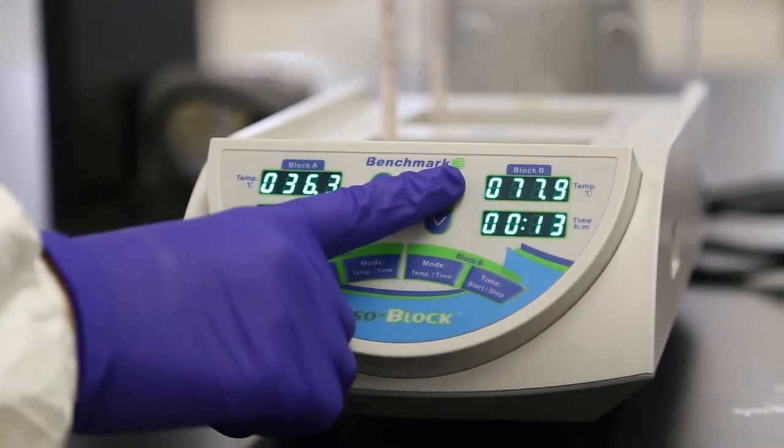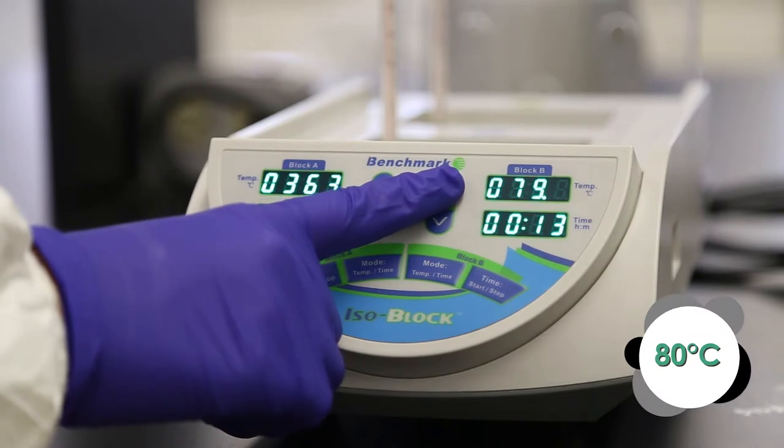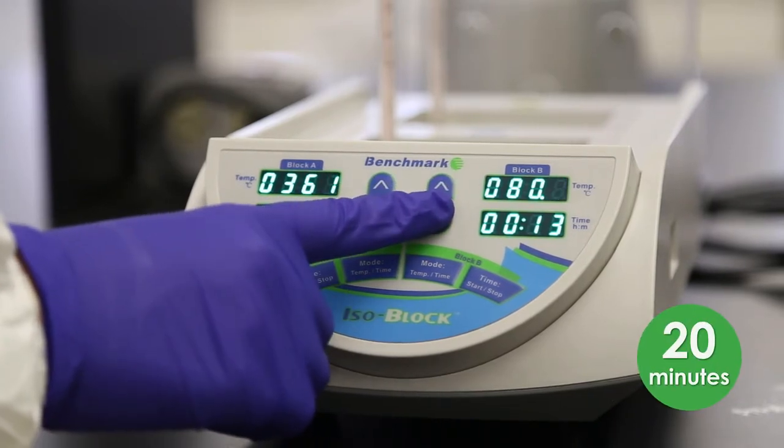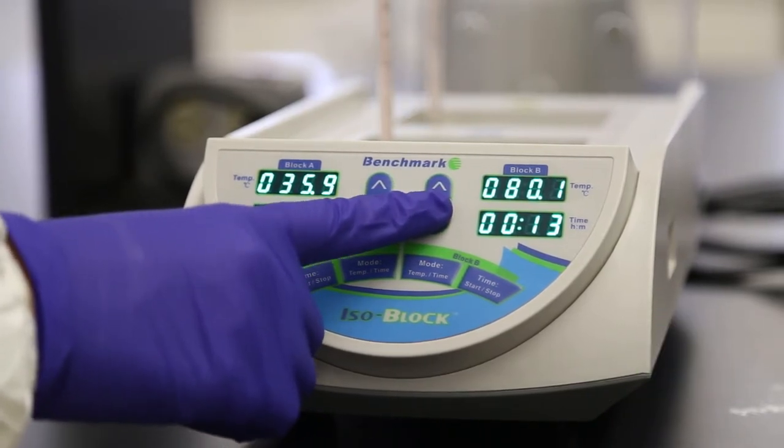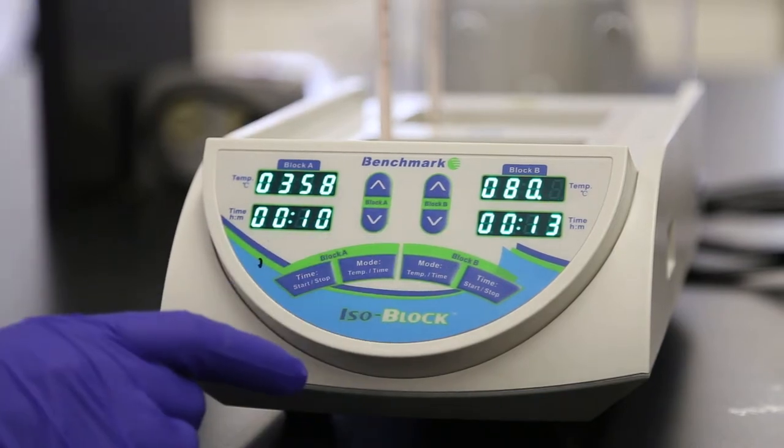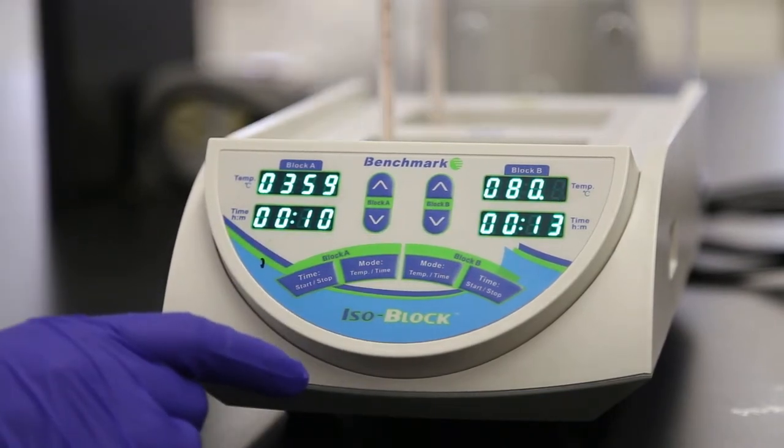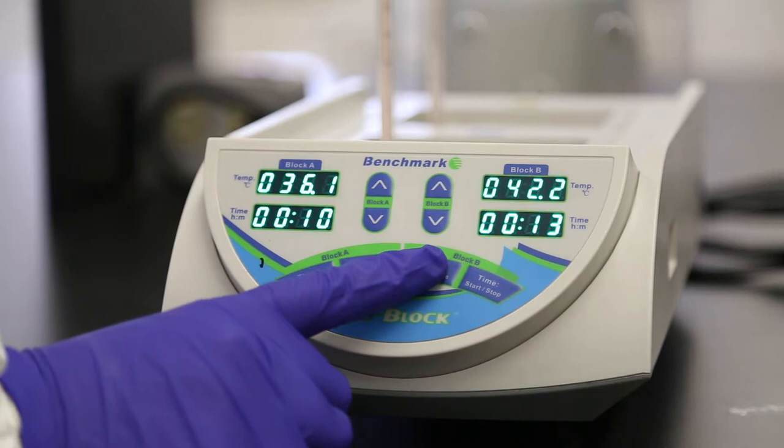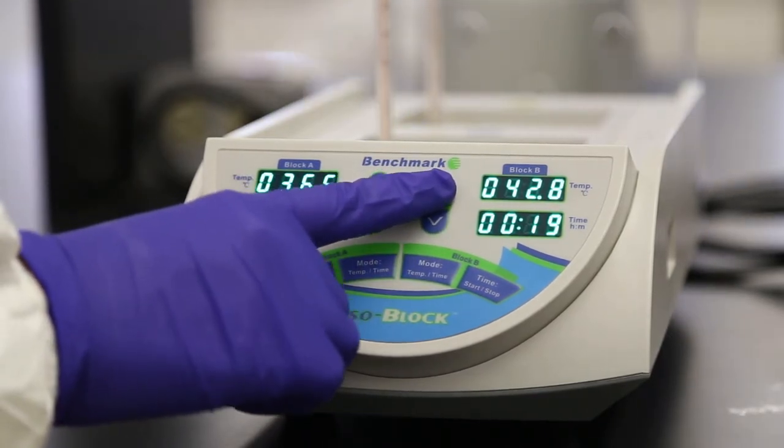Next, set the temperature for Block B to 80 degrees Celsius and the timer for 20 minutes using the controls for Block B following the same steps you used for Block A. Again, the block will immediately start heating. Do not start this timer either.